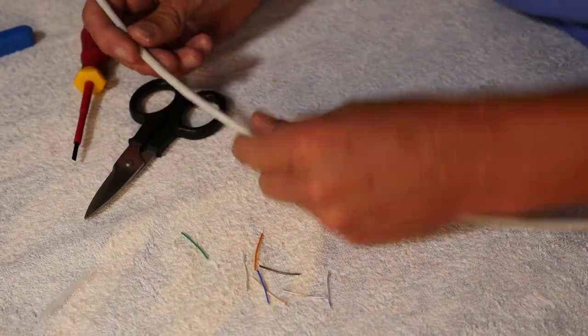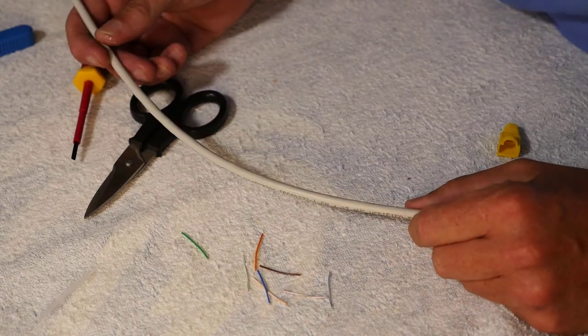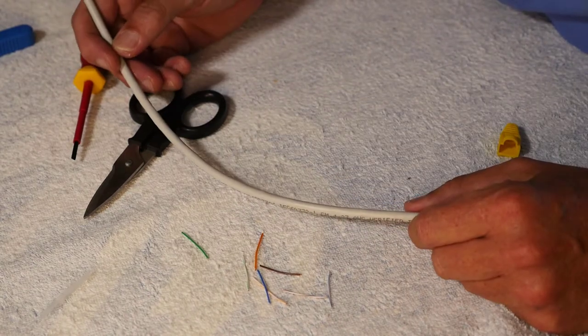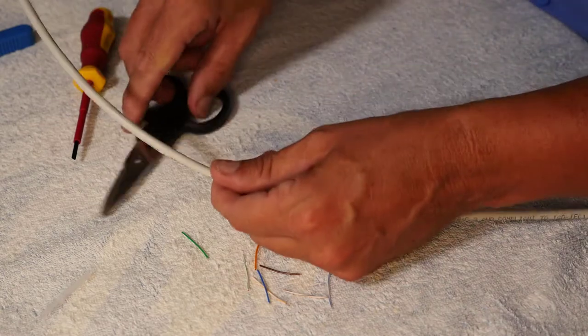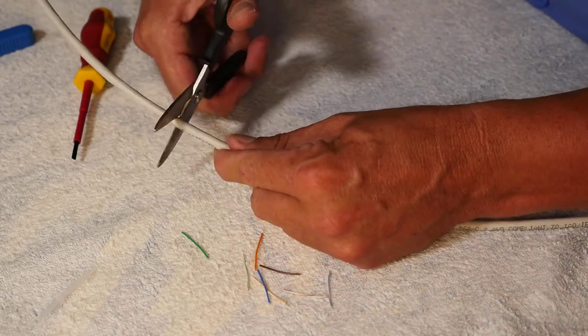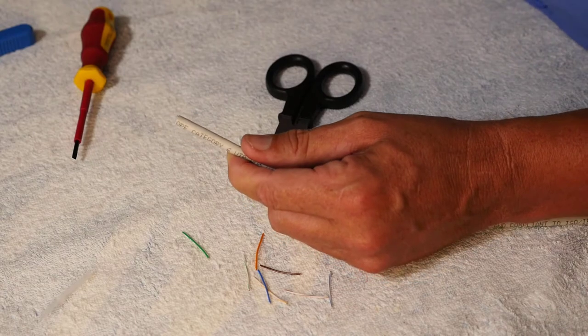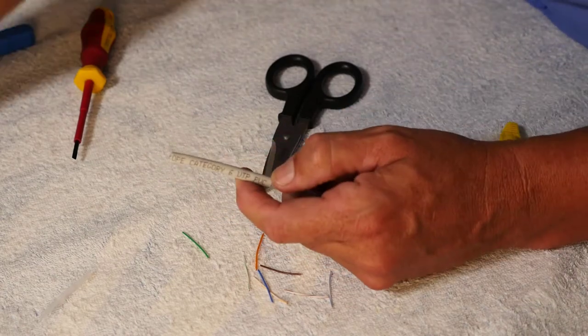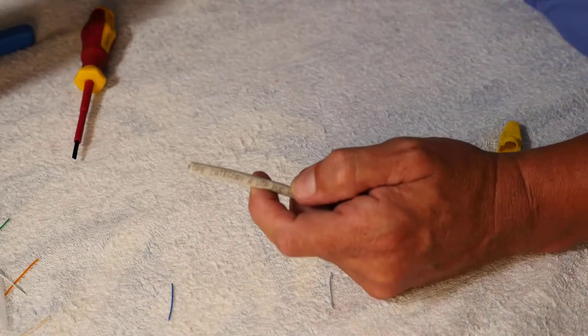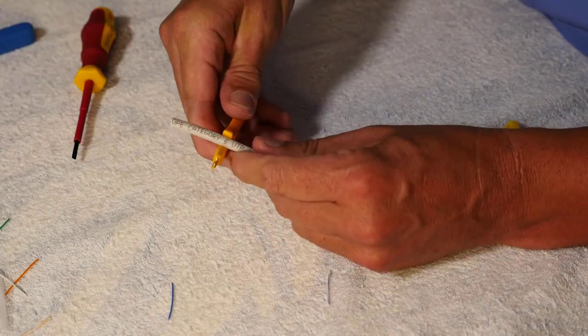I've just measured out 25 meters because we've got a customer that asked for a bunch of cables and one of them's a 25 meter length. So I'm just going to cut that now with scissors. I do have cable snips but scissors are fine providing they're sharp enough. I'm just going to go through the process again.